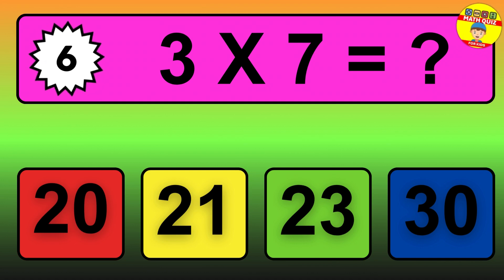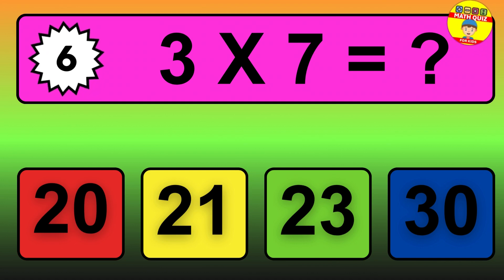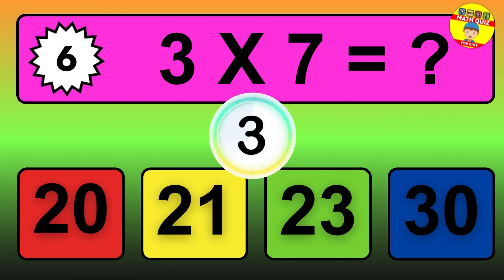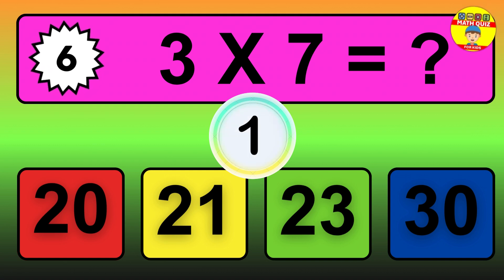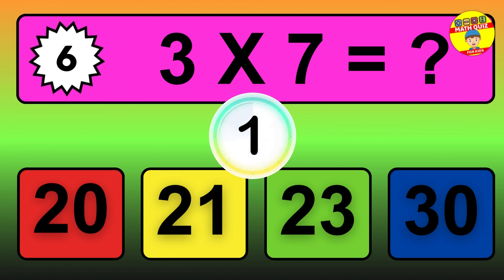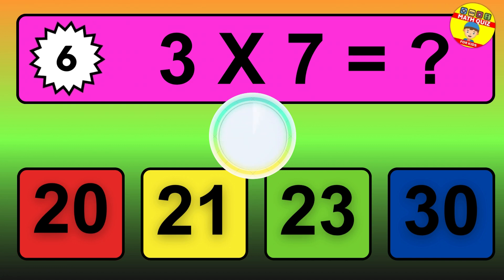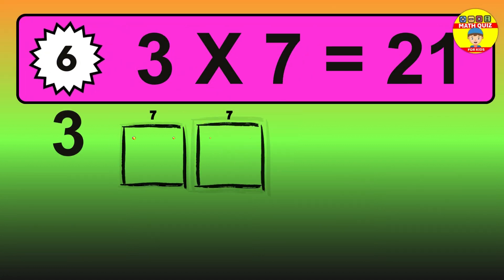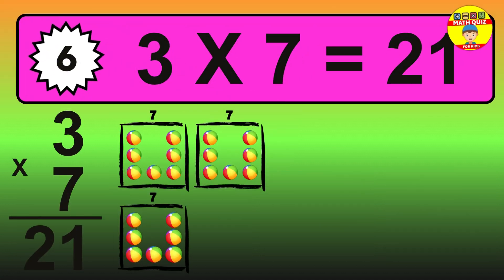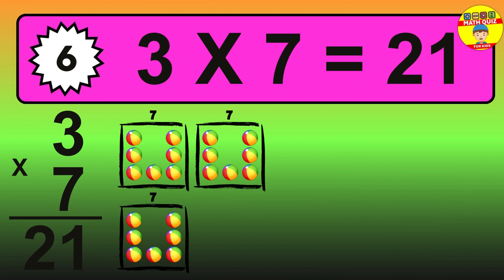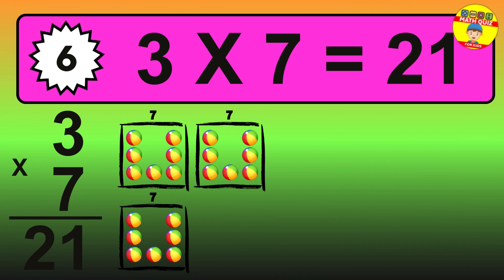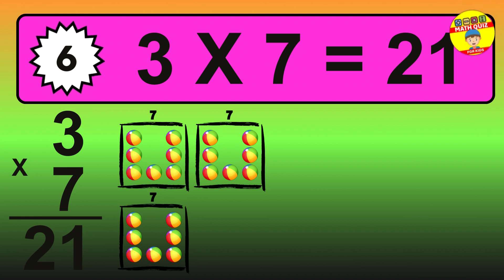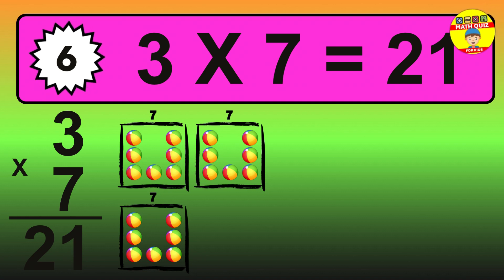Question 6. 3 times 7 equals what? The answer is 3 times 7 is 21. To calculate, we have 3 groups with 7 balls each one. So how many balls do we have? 21 balls.